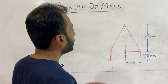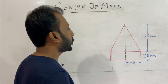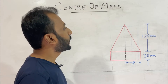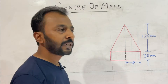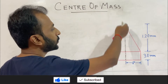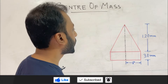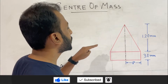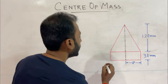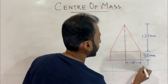This is the solid body, and we need to find where the center of mass exists. The y-axis is the axis of symmetry for this composite solid.